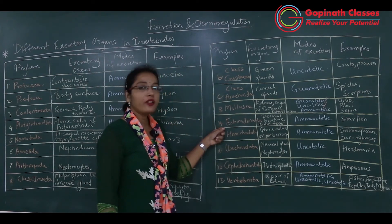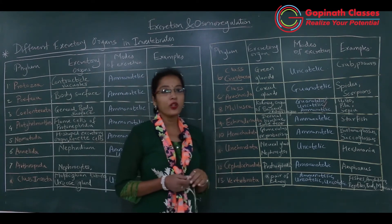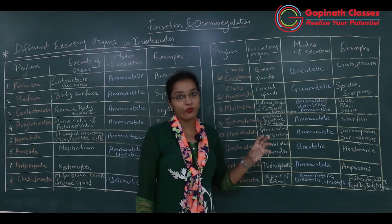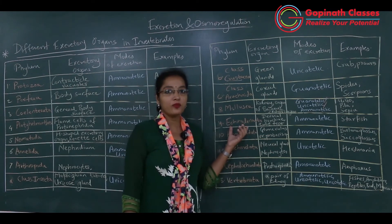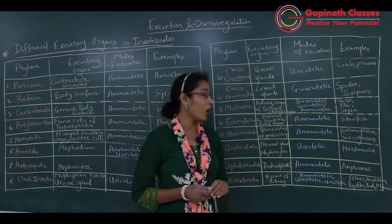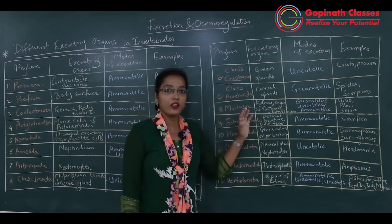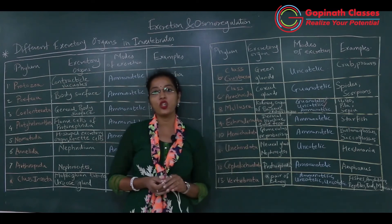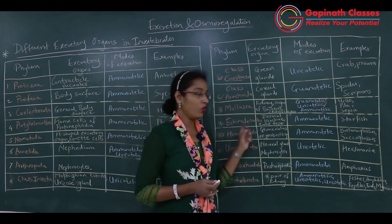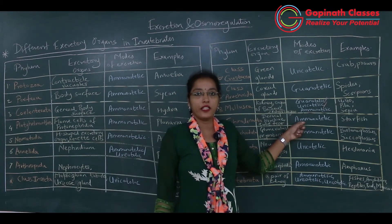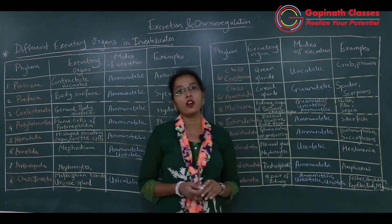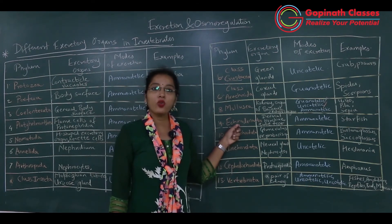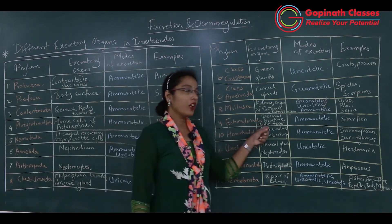The ninth phylum is Echinodermata. Echinoderms have excretory organs called dermal branchiae (also called papulae) or tufted structures. Some echinoderms also release nitrogenous waste as ammonia through the general body surface. Echinoderms are ammonotelic. Examples include starfish, sea cucumber, and sea urchin.